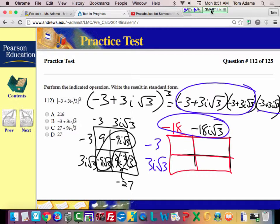So 18 times 3 is what? Is it 54? Positive 54? Yeah. And then this one becomes positive 54i root 3. This one becomes negative 54i root 3.